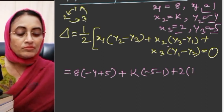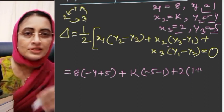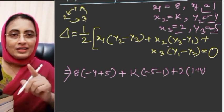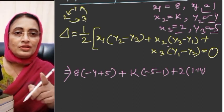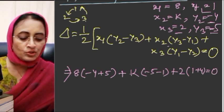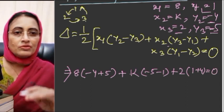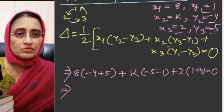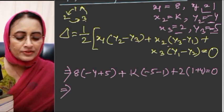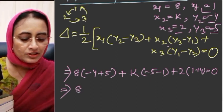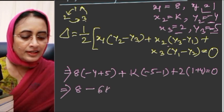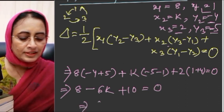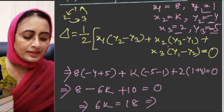Continuing the calculation: 8 into (minus 4 minus 5) means 8 into 1 = 8. Then we get minus 6k plus 10. Setting the full expression equal to 0: minus 6k + 10 = 0, so 6k = 18.